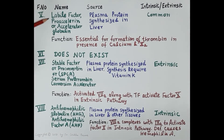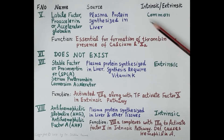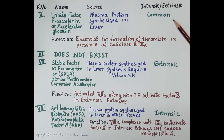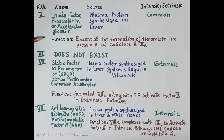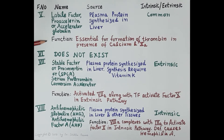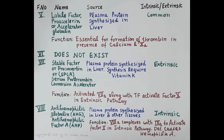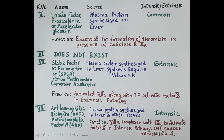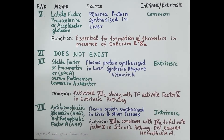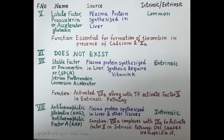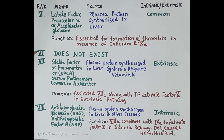Clotting factor 5 is also called the labile factor, proaccelerin, or accelerator globulin. It is a plasma protein synthesized in the liver, and it is common for both the intrinsic and extrinsic pathways. Clotting factor 5 is essential for the formation of thrombin in the presence of calcium and factor 10a. Note that clotting factor 6 does not exist.